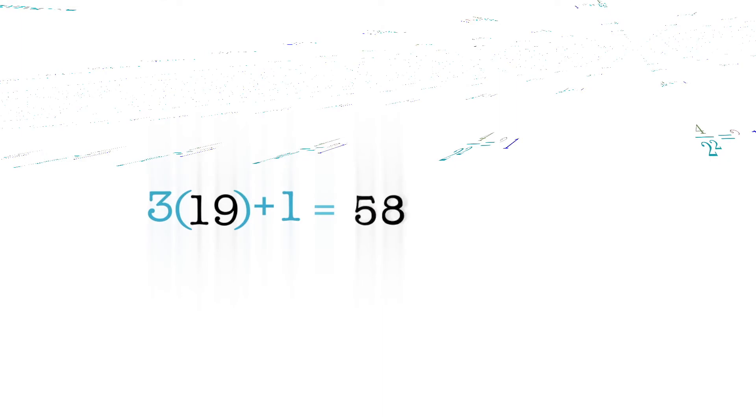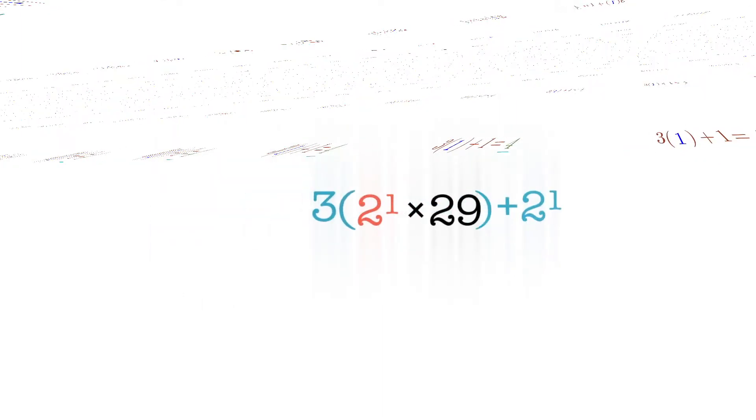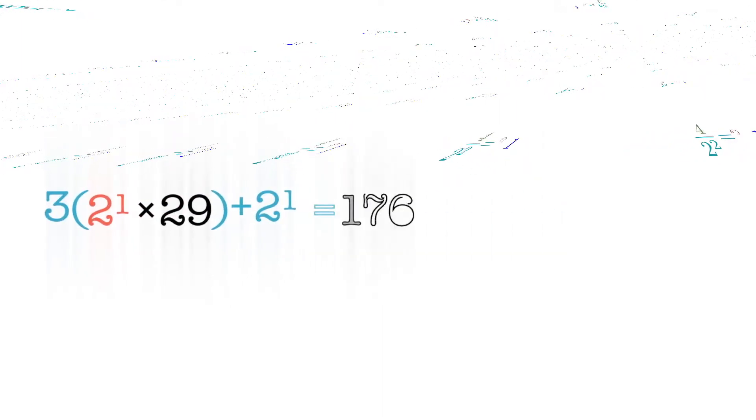As it turns out though, there's a slightly different way that you can do this, where instead of dividing by two after you've multiplied by three, you just include that factor of two.